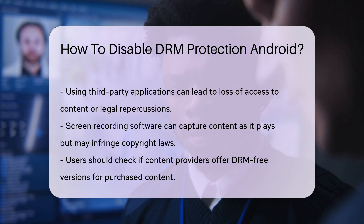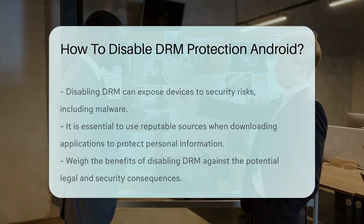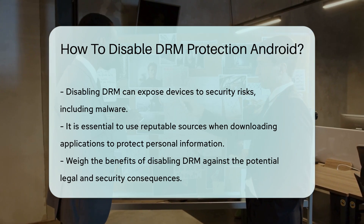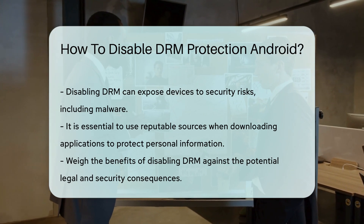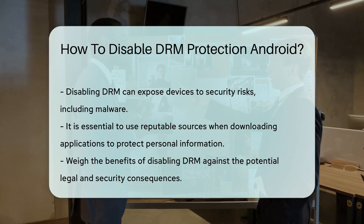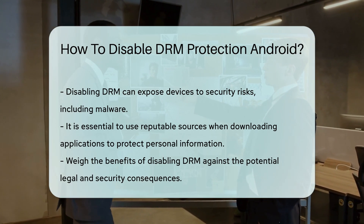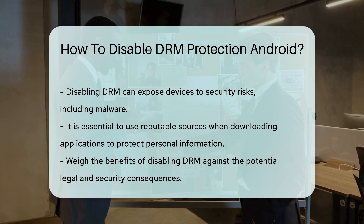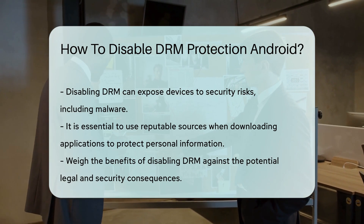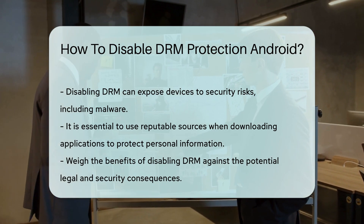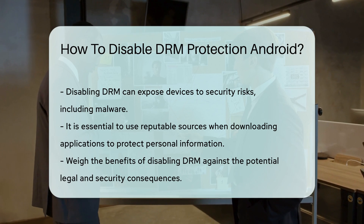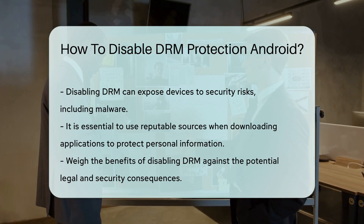Always keep security in mind. Disabling DRM can expose your device to risks, including malware. Ensure that any applications you use are from reputable sources to safeguard your personal information. In summary, while there are methods to disable DRM on Android, they come with legal and security risks. Always weigh the benefits against potential consequences.